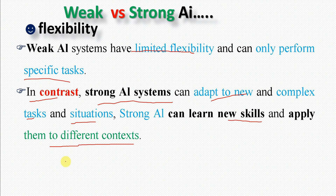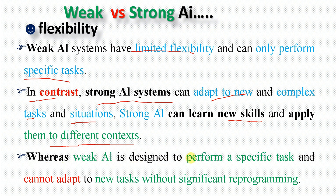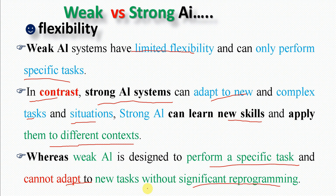Whereas weak AI is designed to perform specific tasks and cannot adapt to new tasks without significant reprogramming, strong AI needs no pre-programming to be applied to new tasks.